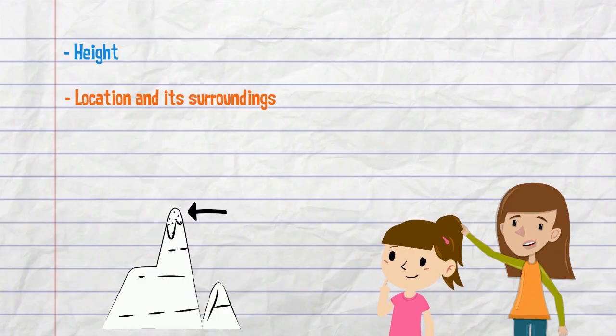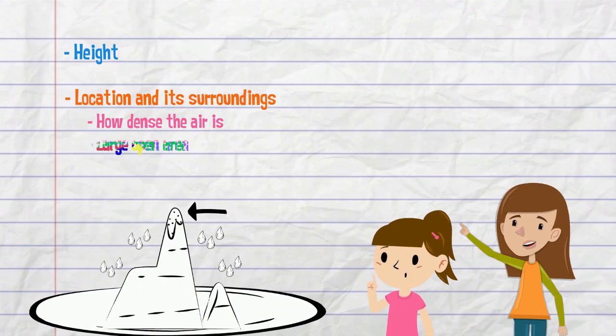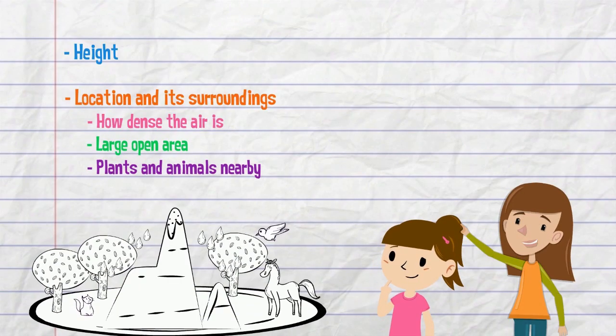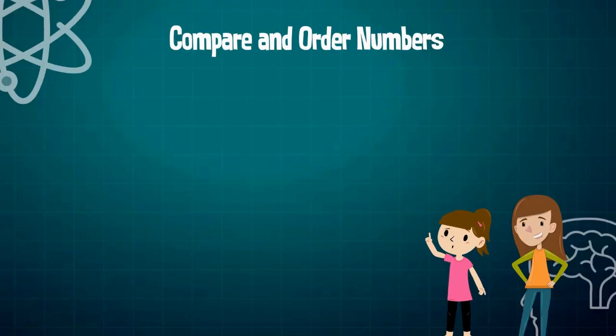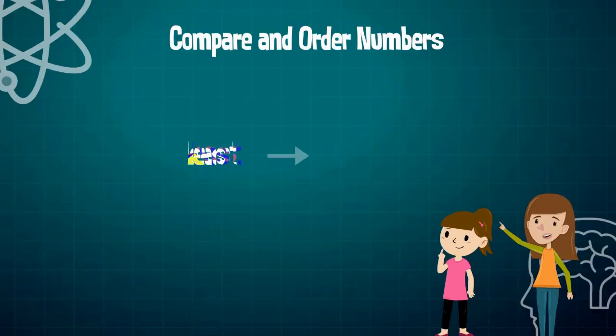What do you mean? We have to think about how dense the air is from where we will be launching from, whether there is a large open area, and if there are plants and animals close by that we can affect. But for now, let's just look at the height. We can go over how to order a set of numbers from least to greatest or from greatest to least. Well, that sounds interesting.